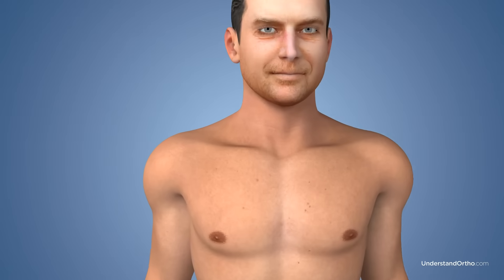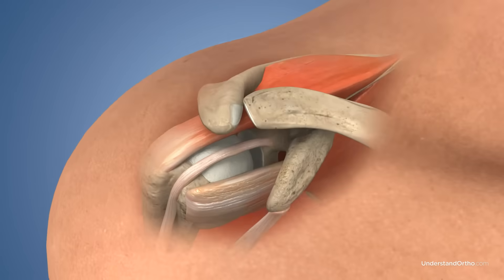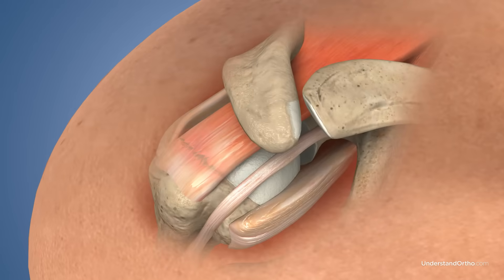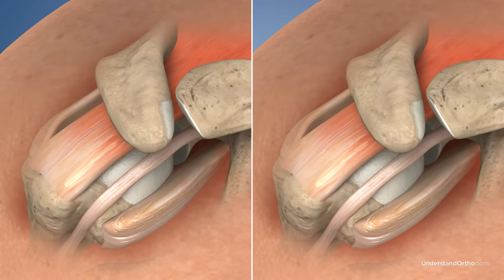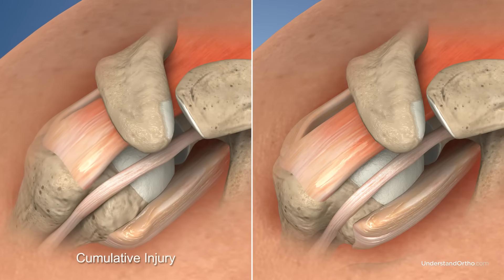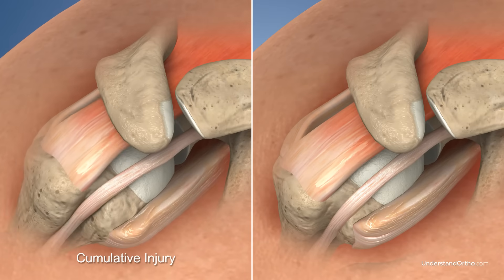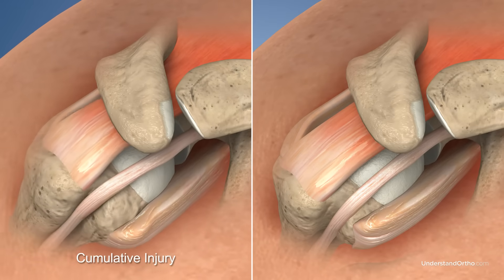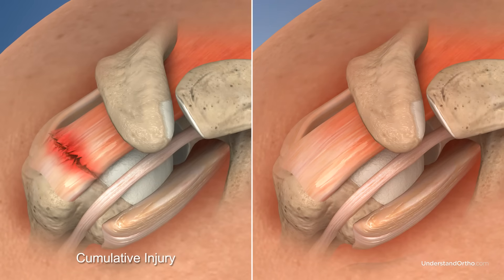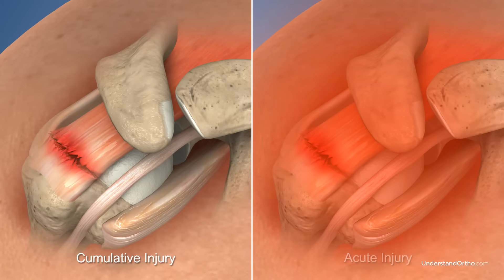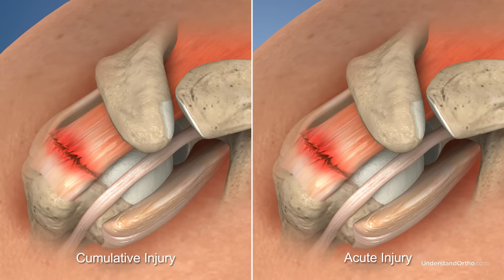Rotator cuff tears occur when at least one of the cuff tendons is torn, fully or partially detaching the muscle from the humerus. These tears are most commonly caused by either cumulative injury through repetitive motions, such as in throwing sports and weightlifting, or by a sudden or acute injury, such as a fall.